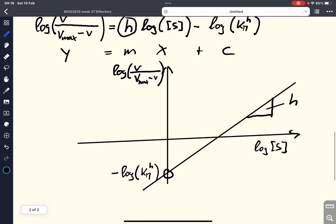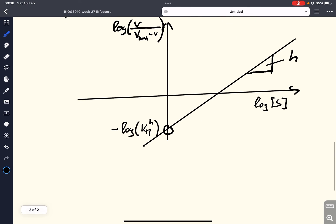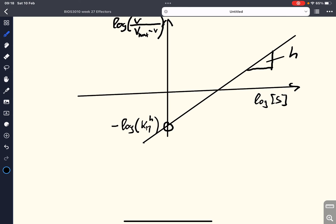And this H tells us about the cooperativity of the enzyme in terms of substrate binding. So, we said that the Hill coefficient always has to be larger than zero. So, if the Hill coefficient is smaller than one, we have the effect of negative cooperativity.